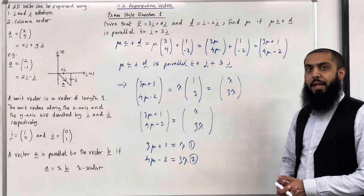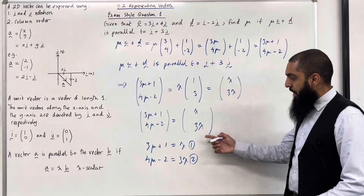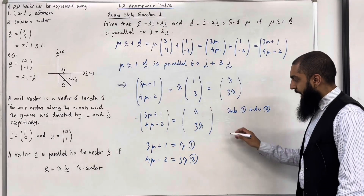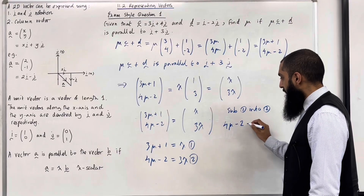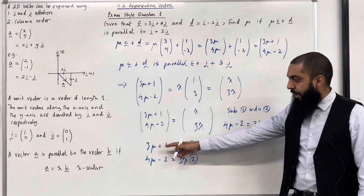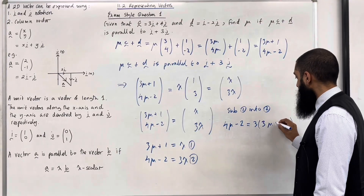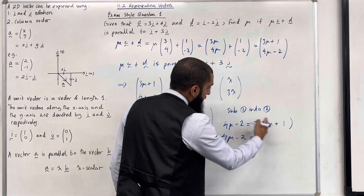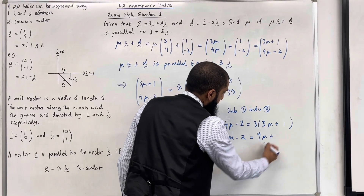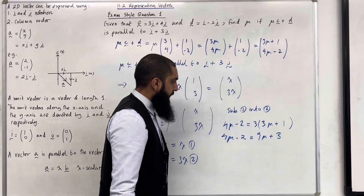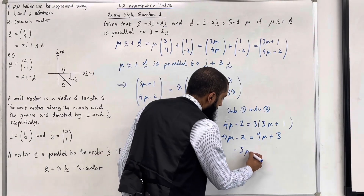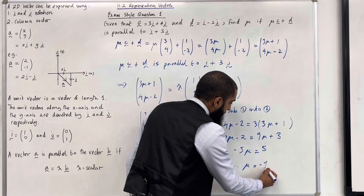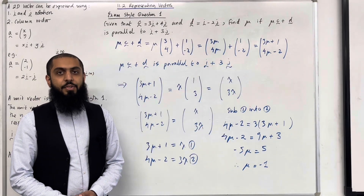Our target is to work out the value of mu. I can substitute equation 1 into equation 2. So I get 4mu minus 2 equals 3 lots of (3mu plus 1). Expanding the bracket: 4mu minus 2 equals 9mu plus 3. So 4mu minus 9mu equals 3 plus 2, which gives minus 5mu equals 5. Therefore mu equals minus 1. That completes exam-style question 1.